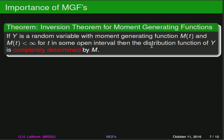A couple of theorems will give you a notion of the strength of moment-generating functions. The first is the inversion theorem for moment-generating functions. What the inversion theorem says is that if y is a random variable with a moment-generating function m of t, and m of t is finite in some open interval, then the distribution of y is completely determined by m. So a particular distribution has a unique moment-generating function, and if we know the form of the moment-generating function, that also uniquely determines the distribution. These are really two different ways of looking at distributions — they are one and only one thing.